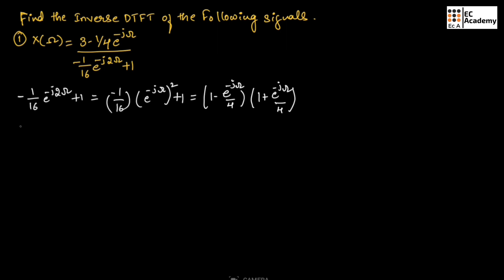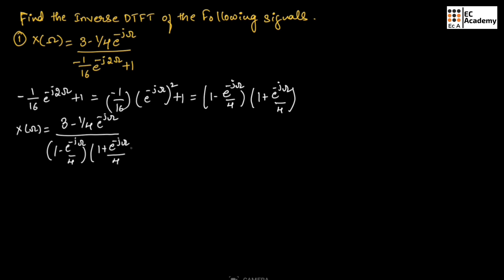Therefore, we can write X(ω) equal to 3 minus 1/4 · e^(−jω), all divided by (1 − e^(−jω)/4)(1 + e^(−jω)/4). We can write this as A divided by (1 − e^(−jω)/4) plus B divided by (1 + e^(−jω)/4).